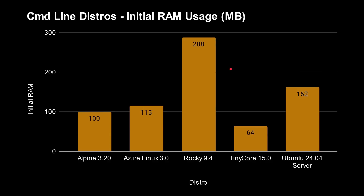When it comes to initial RAM usage — just boot up the system and ask how much RAM it's using — there's quite a difference. Alpine and Azure are around 100 megabytes, Ubuntu Server uses 162 megabytes, and Rocky 9.4 uses 288 megabytes — two or three times what some others need. Tiny Core is down at 64 megabytes, which is pretty impressive. So for a command line server, between 100 and 300 megabytes covers the boot. Of course, running a web server under load will consume more, but that's the initial baseline.